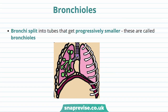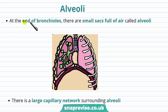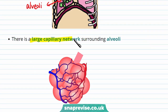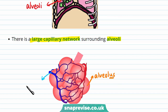The lungs also have bronchioles. This is where the bronchi split into tubes that get progressively smaller — these are called bronchioles. At the end of these bronchioles there are small sacs full of air called alveoli. The lungs have millions of these alveoli, and there is also a large capillary network that surrounds the alveoli, which increases the efficiency of gas exchange.